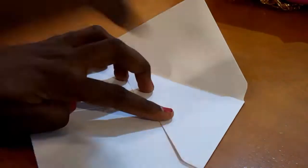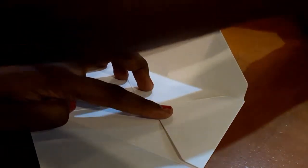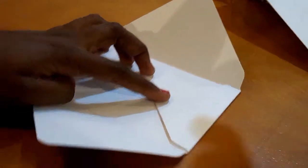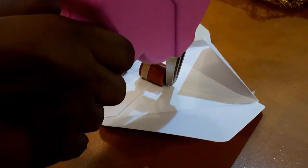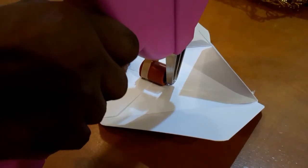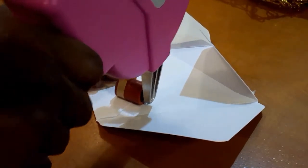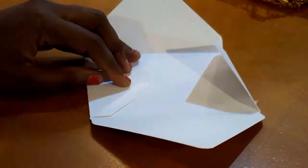Now using my ATG gun I'm just going to seal the sides of the envelope to complete the look. I'm just closing the envelope here and it's simple as that.